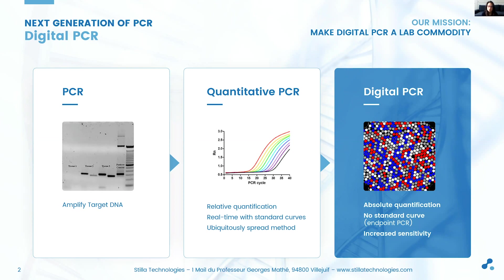Although easy to use, qPCR is a relative quantification method as it requires the establishment of a calibration curve with standard samples of known concentration. These standards may not amplify with the same efficiency as the sample of interest, which may bias the quantification.